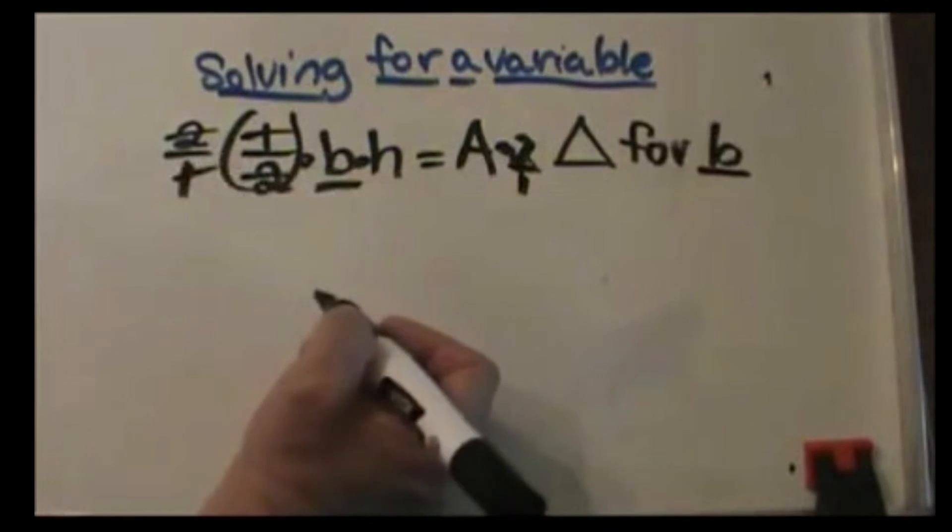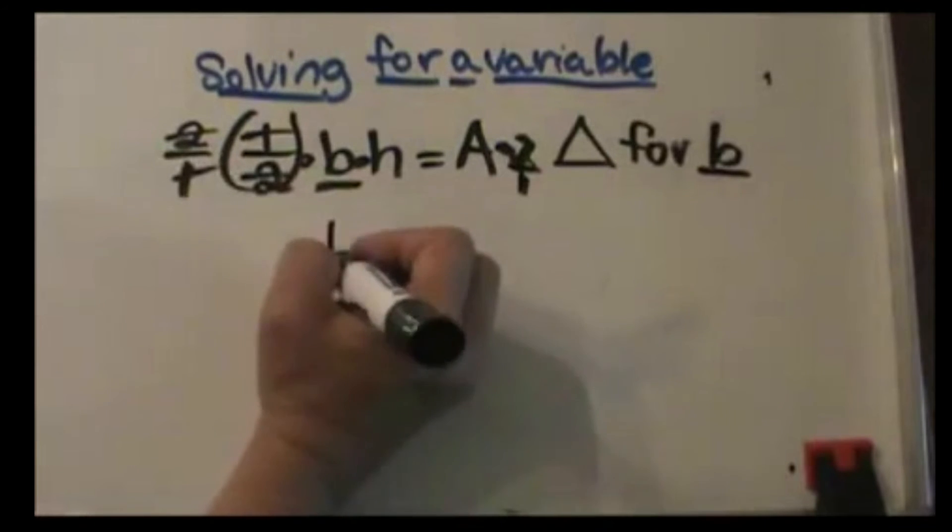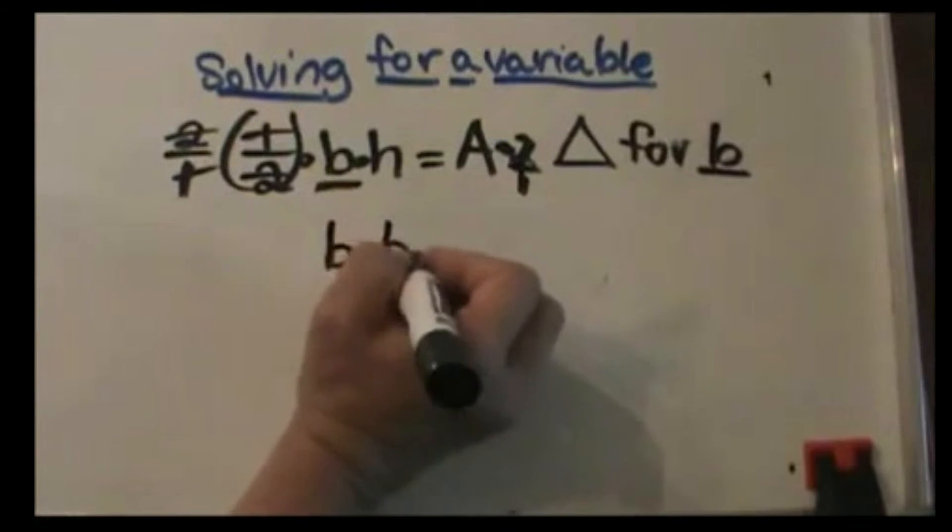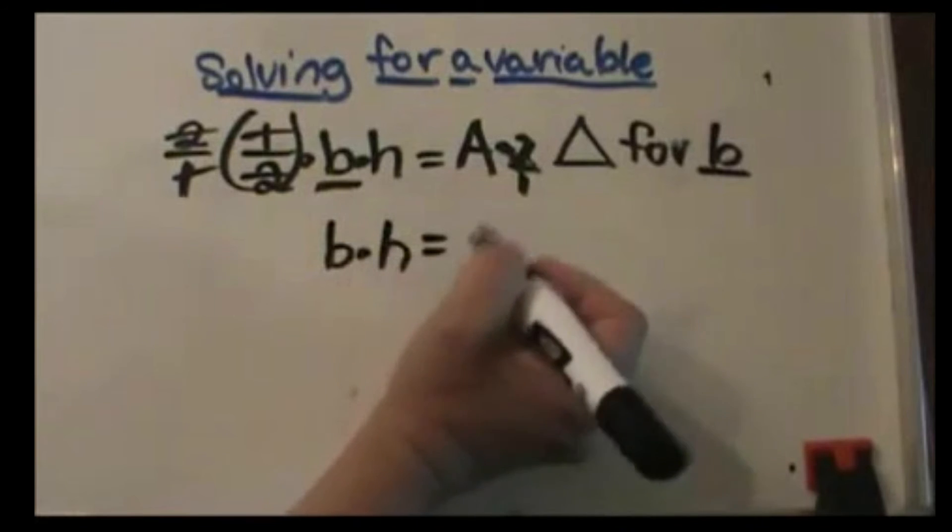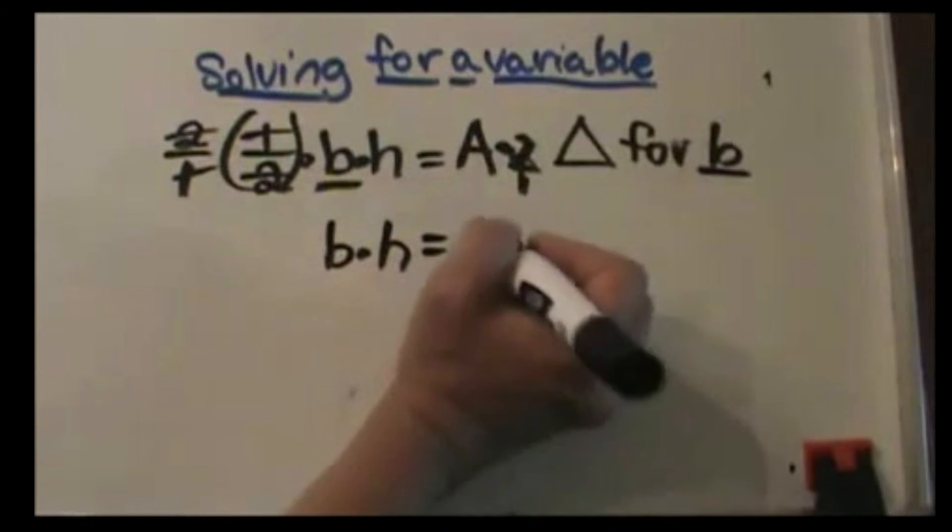So what am I left with once I multiply by the reciprocal? I'm left with base times height is equal to A times two, and I like to put my coefficient first, so I'm going to put 2 times A.